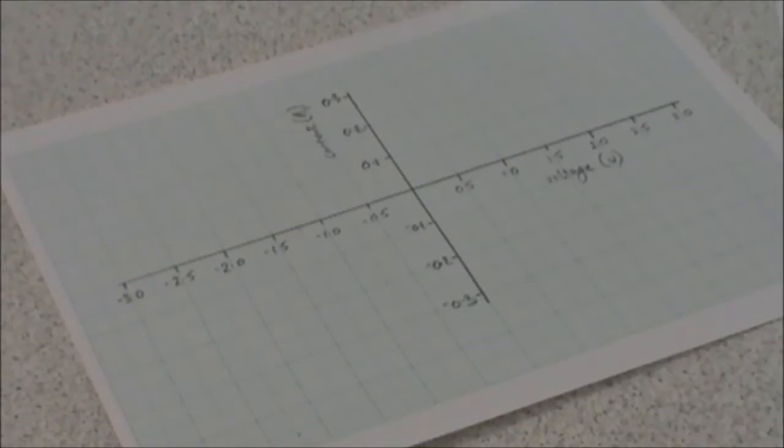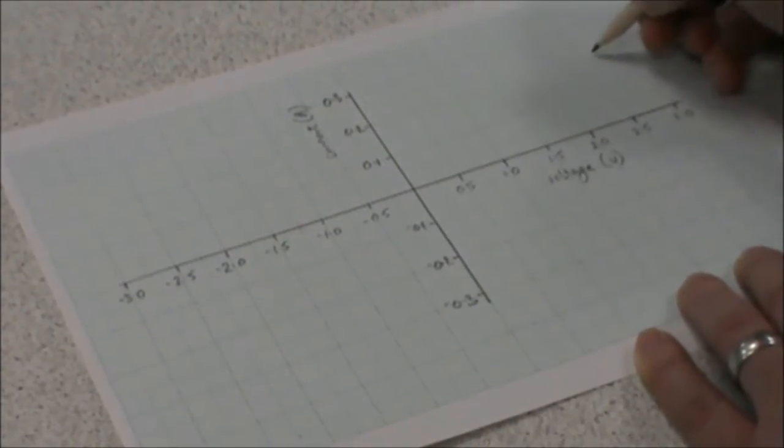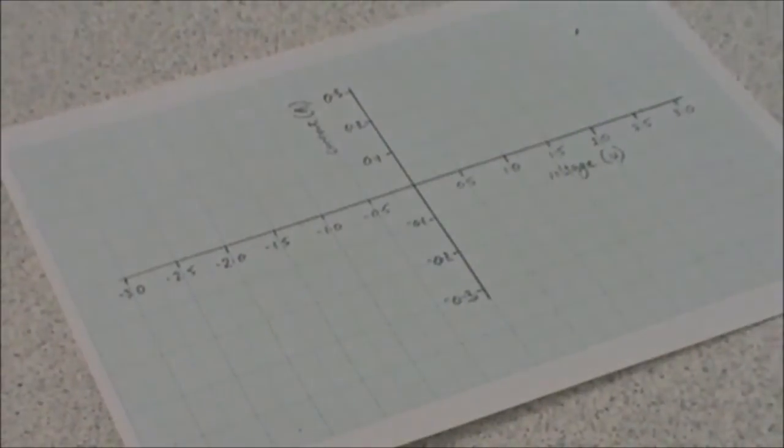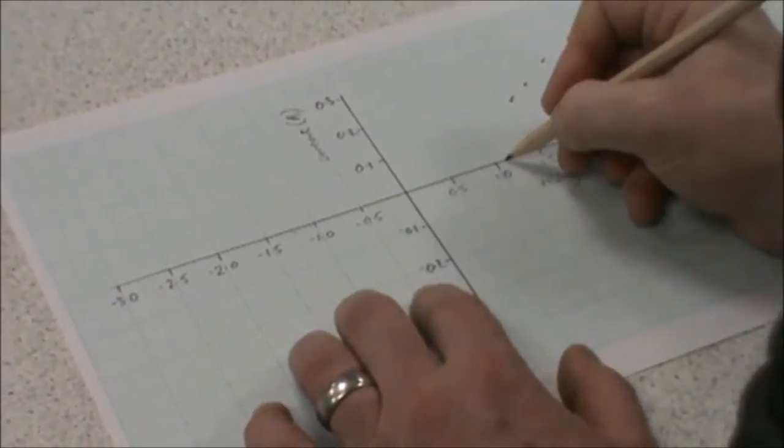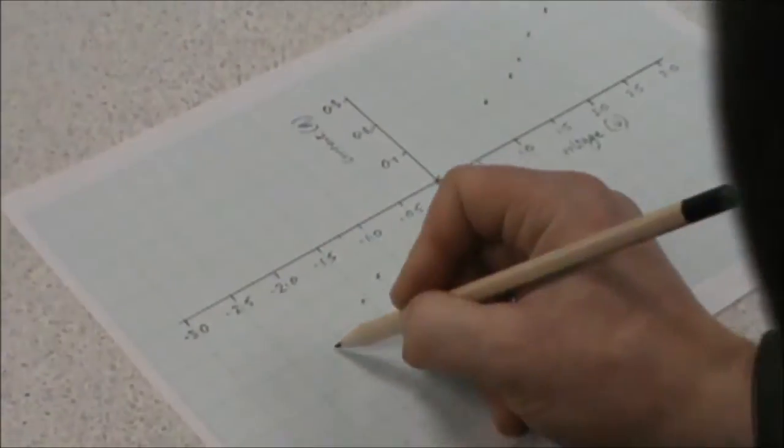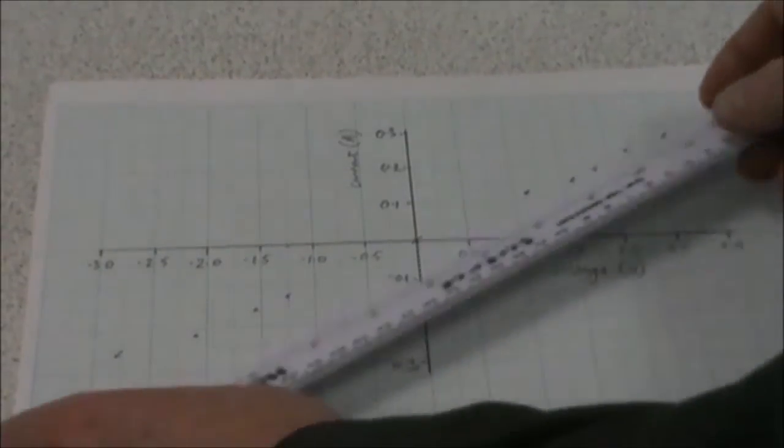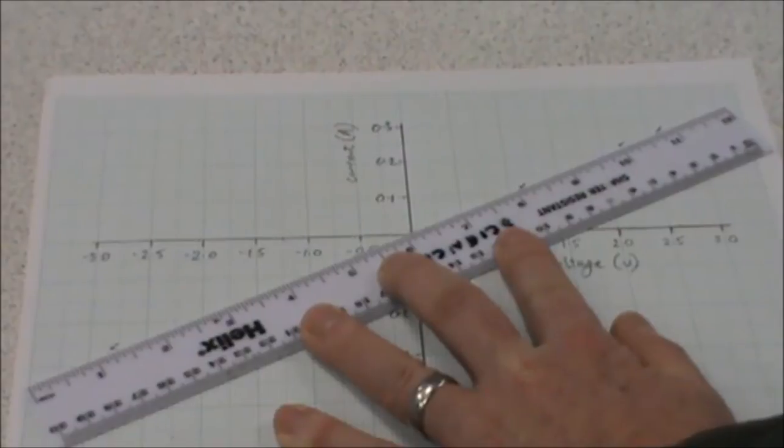Now we can plot our results. Our starting point is 2.62 volts and 0.27 amps, so here's 2.5 and there's 2.6, and up to 0.2, 0.27, which puts our first point just there. Now we can plot the rest. We can see that we can try to put on a line of best fit. Place our ruler on and we can see that the points are pretty much in a straight line.